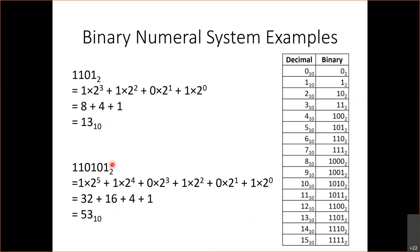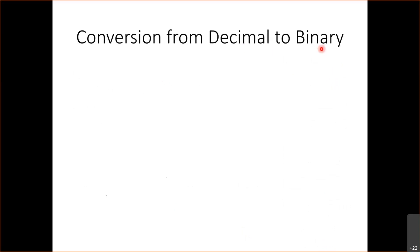Here are the numbers 0 to 15 and their corresponding representations in binary. You'll start getting used to counting in binary: 0, 1, 10, 11, 100, 101, 110, 111, and so on. Now let's look at how we convert from decimal to binary.